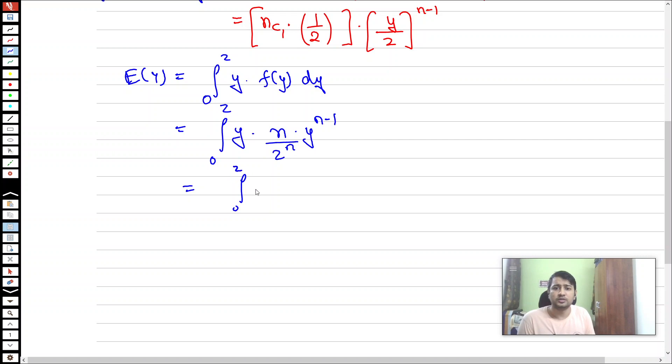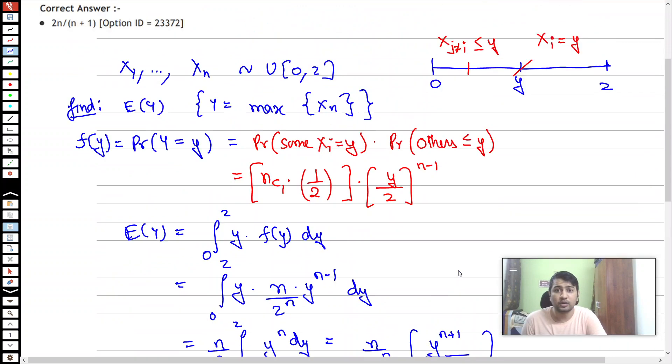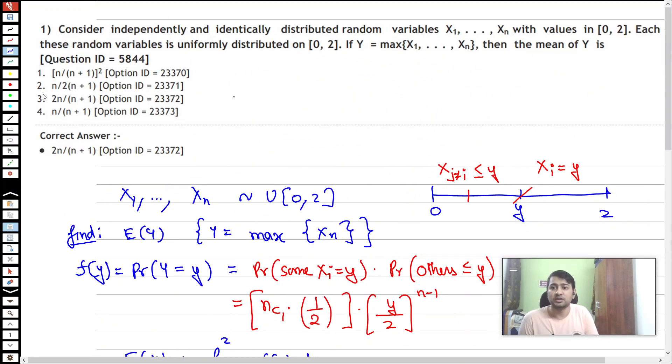Taking n/2^n outside, this becomes (n/2^n) times the integral of y^n dy from 0 to 2, which equals (n/2^n)·[2^(n+1)/(n+1)]. Simplifying, that's 2n/(n+1). Going back to the options, this is option number 3: 2n/(n+1).